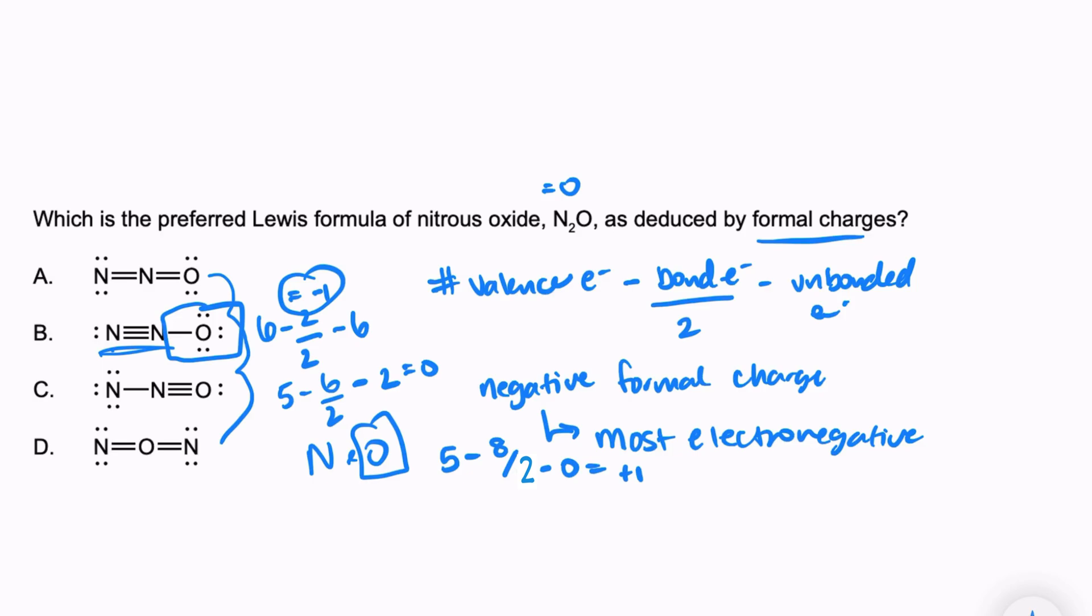In total, our formula has a net formal charge of zero, which is what we're looking for. And there is an atom with a negative charge and it is the oxygen. So I'm going to circle letter B. I'm not going to check the rest because I don't need to, and that really would be a big waste of time.